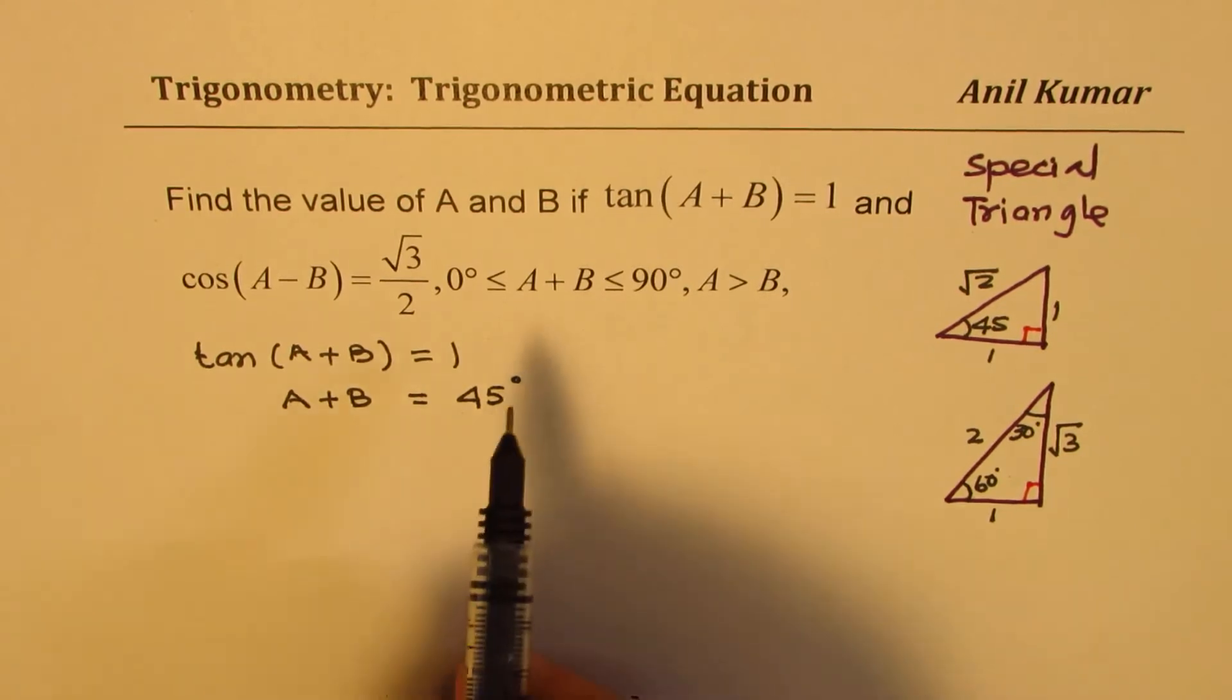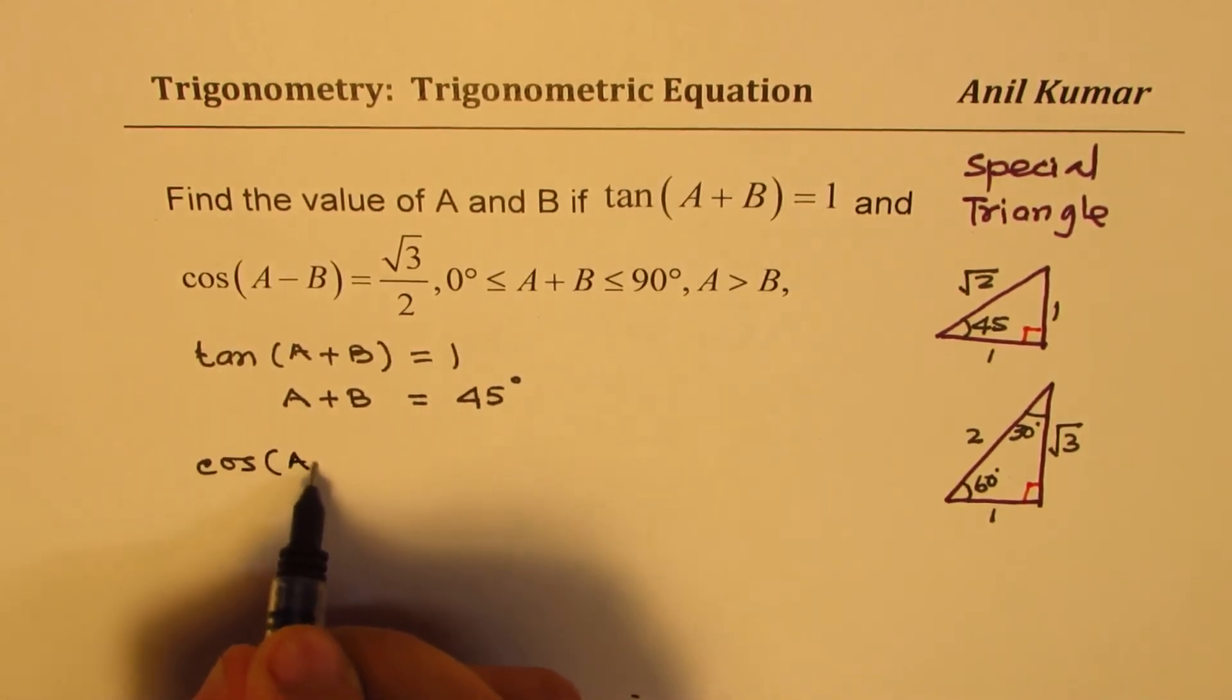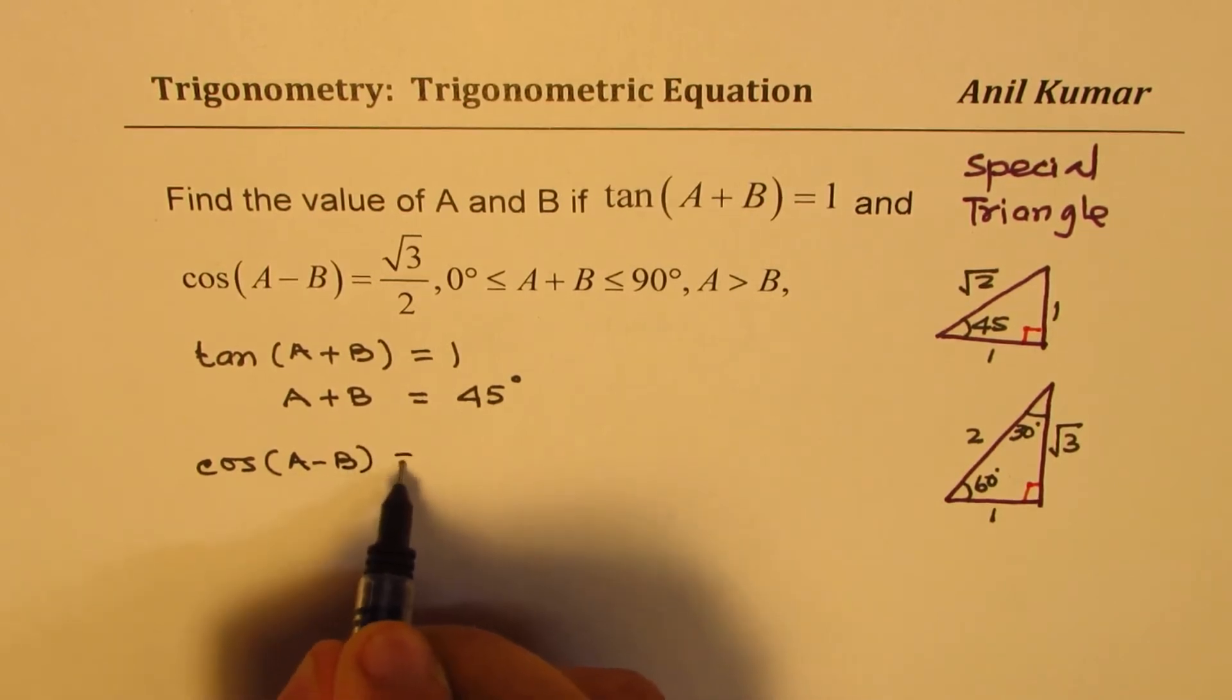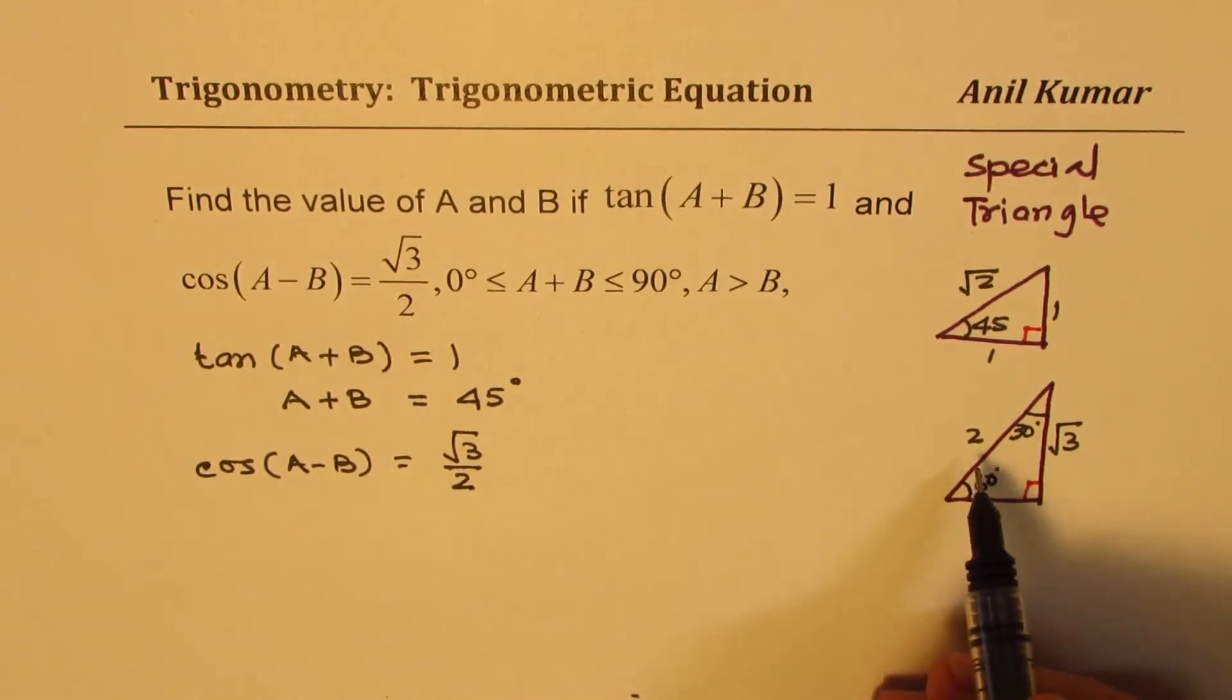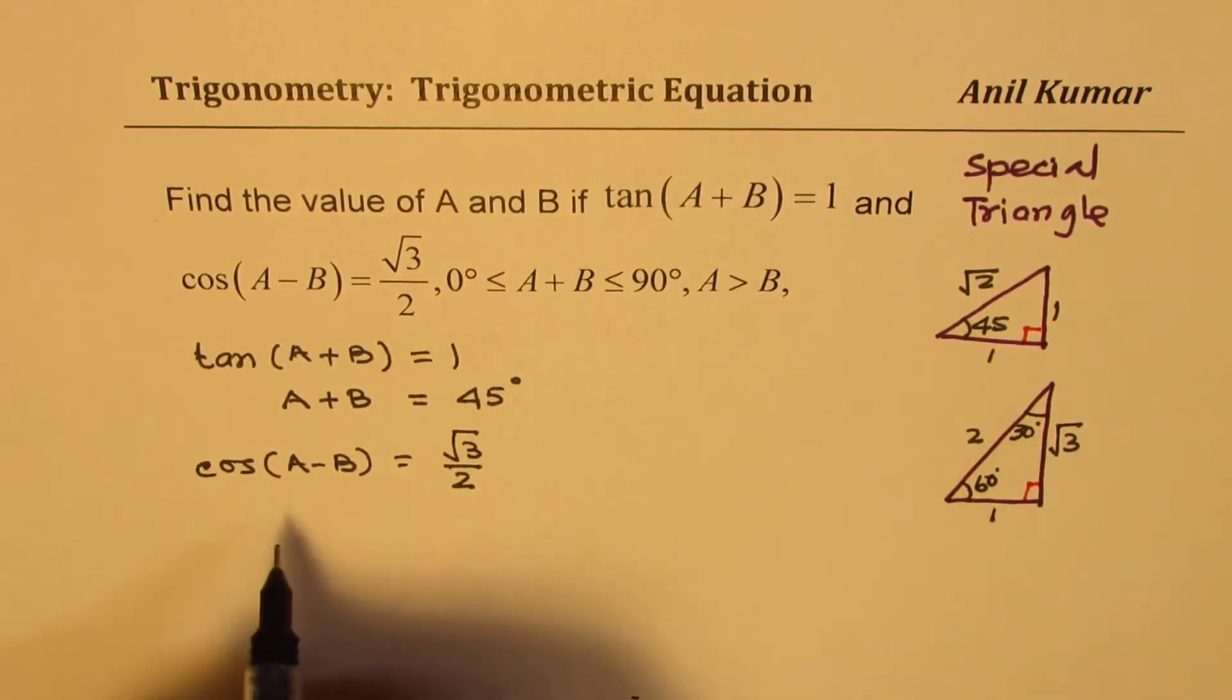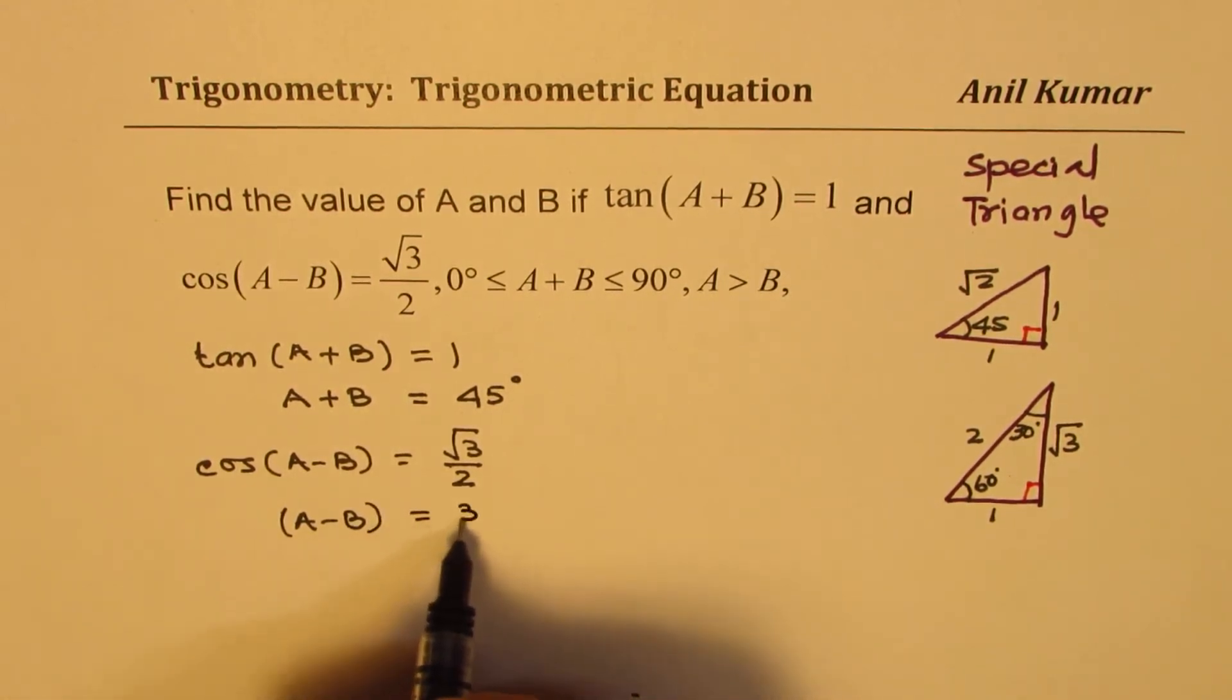Perfect. The other equation is cos(A-B) = √3/2. Now if you look into this, cos is adjacent over hypotenuse. So A-B equals 30 degrees.